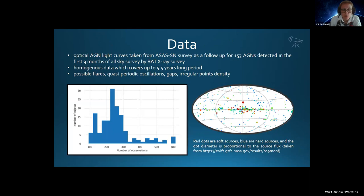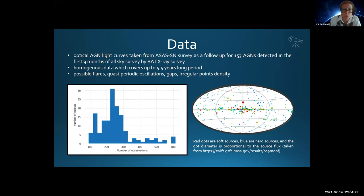In this research, we have processed 153 optical light curves from All-Sky Automated Survey for Supernovae Telescope detected in the first nine months of All-Sky Survey collected by the Burst Alert Telescope. Each object has between 100 and 600 data points, and we have tested our dealings with this data sample because these objects make a good representation of homogeneous uniform data from 80% of the sky with irregular density of observations with gaps, flares and possible quasi-periodic oscillations. These objects also cover up to 5.5 years, considering that LSST time baseline will cover a 10-year-long period.